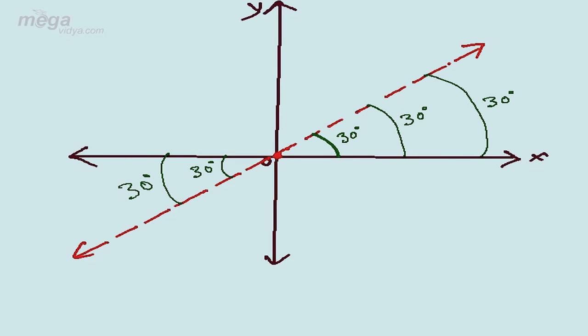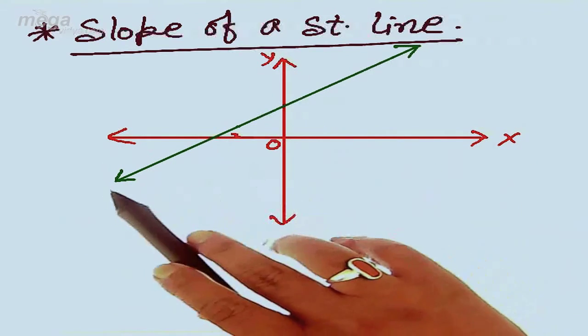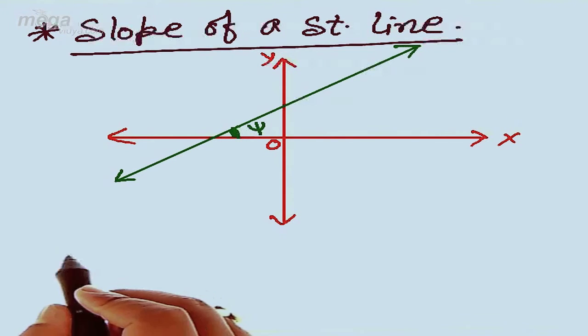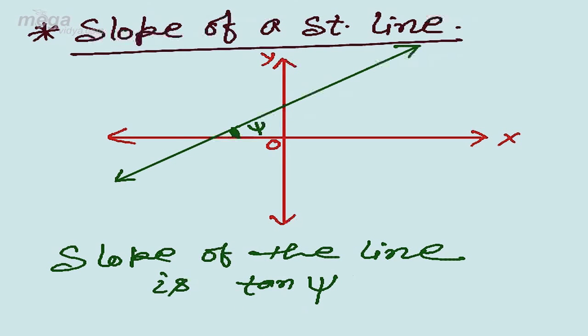So when a line is moving at a particular angle — making an angle theta, alpha, beta, or gamma — with the positive direction of the x-axis, what does it represent? It represents the slope of a straight line. When there is an x-axis, y-axis, and a line which subtends an angle ψ, then the slope of the line is tan(ψ).